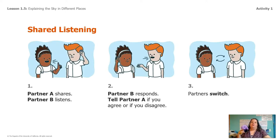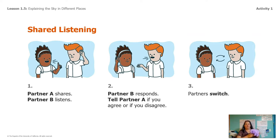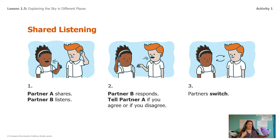It's really important for us to talk through our ideas. Here's how the shared listening is going to go: Partner A shares, Partner B listens, then Partner B responds and says if they agree or disagree, and then you switch. So: share, listen, respond, and then agree or disagree.